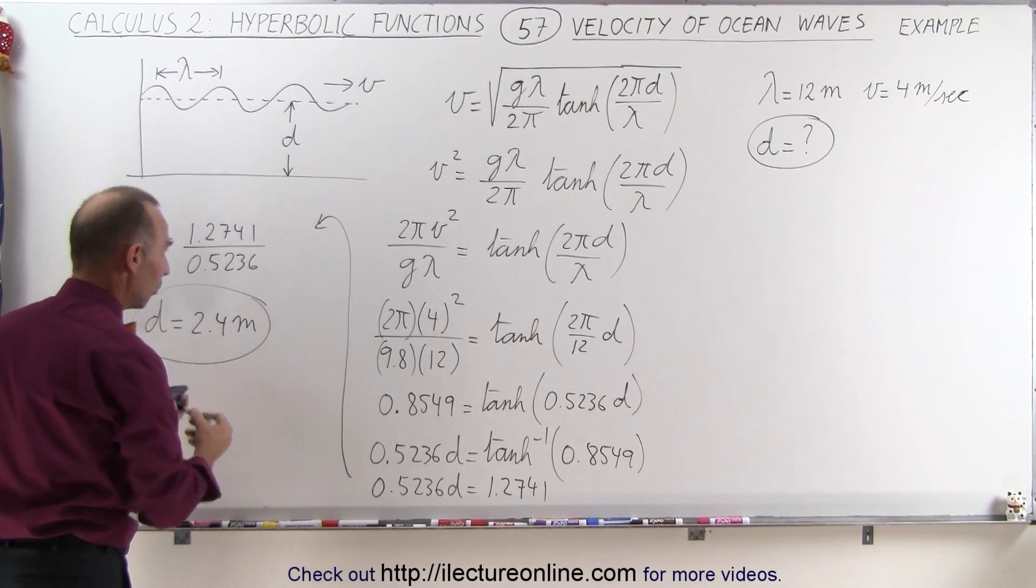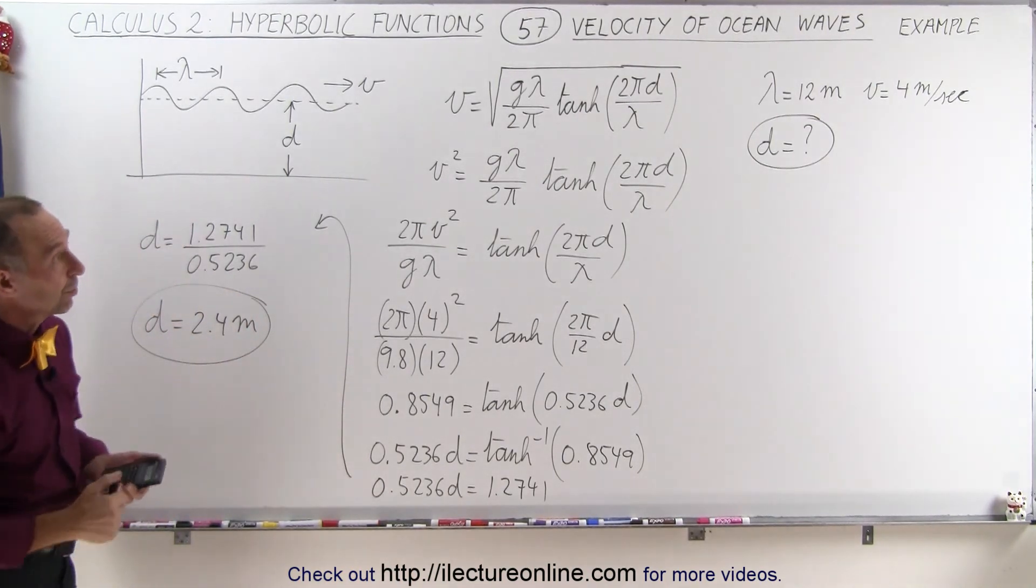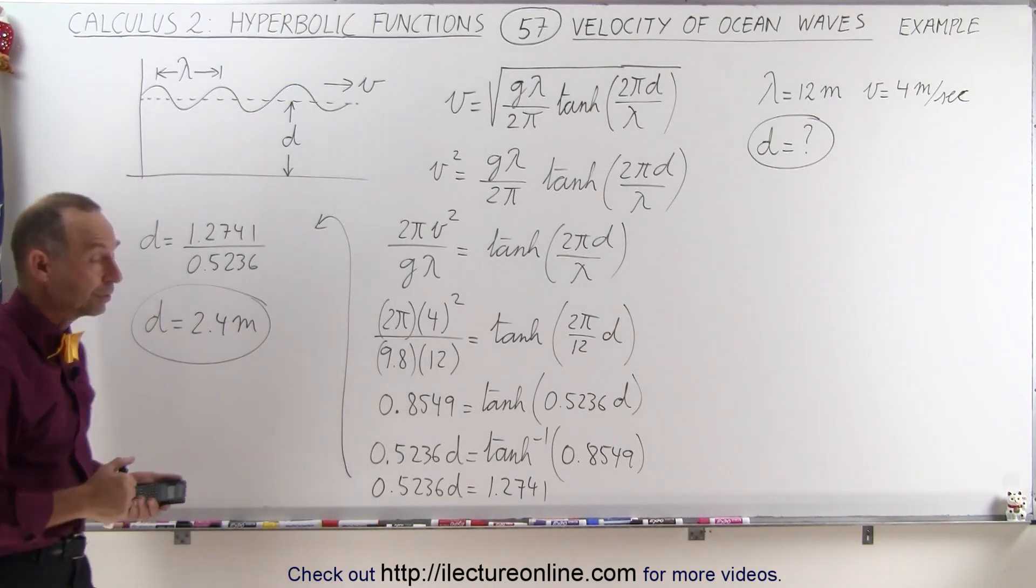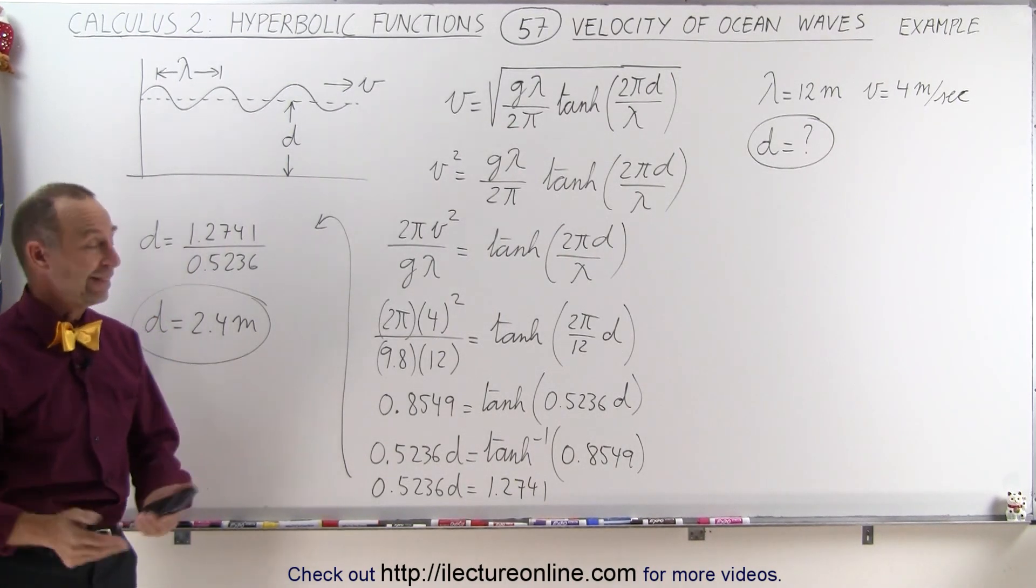So if the waves are traveling at 4 meters per second and the wavelength is 12 meters, we can assume the depth is about 2.4 meters. And that's how that's done.